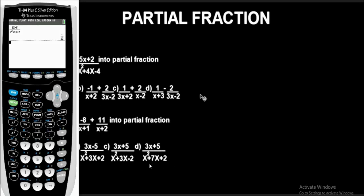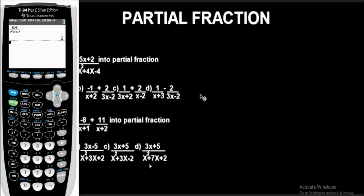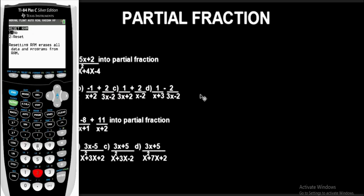The correct option for question two is option B. Feel free to check options C and D, but you will get wrong values. This is how I solve problems involving partial fractions using the TI-84 Plus scientific calculator in seconds for multiple choice algebra questions. If you have any specific questions, leave them in the comments below. Don't forget to reset your calculator when done: press second, plus, 7 to reset, press 1, then 2, and it will reset. Thanks for watching!